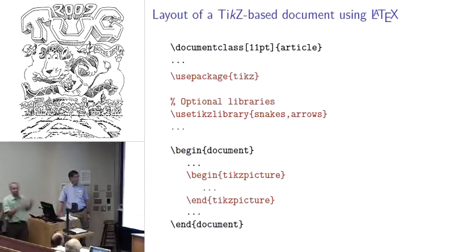First off, the bare bones document - really nothing terribly surprising here. You use package TikZ, you can include some optional libraries if you want that come with the installation of TikZ, like snakes and arrows. Inside your document, whenever you want to include a graphic, you just do begin TikZ to start a TikZ picture environment, and inside there you'll put all of your TikZ code.